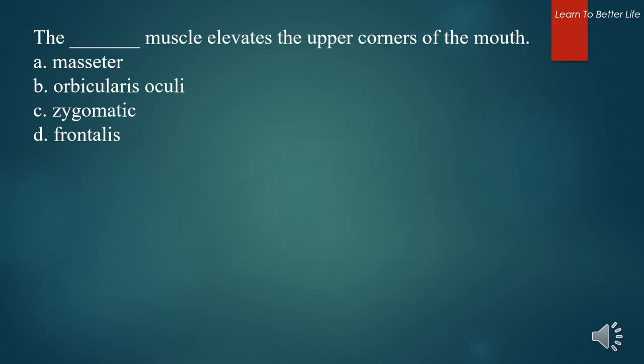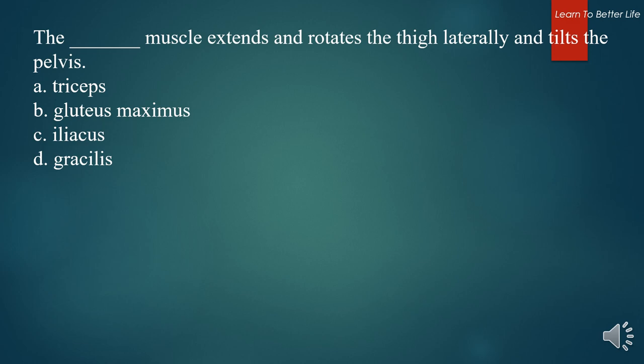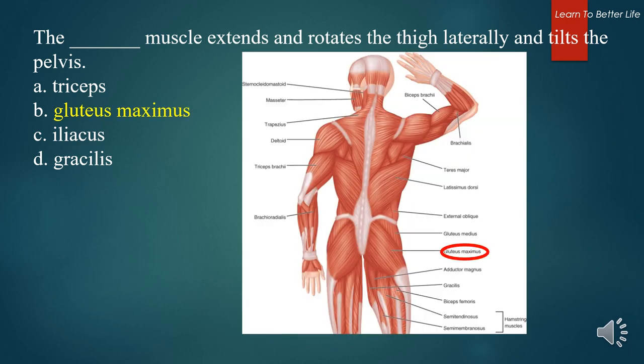What muscle elevates the upper corners of the mouth? A. Masseter. B. Orbicularis oculi. C. Zygomatic. D. Frontalis. The answer is C. Zygomatic. What muscle extends and rotates the thigh laterally and tilts the pelvis? A. Triceps. B. Gluteus maximus. C. Iliacus. D. Crusillius. The answer is B. Gluteus maximus.